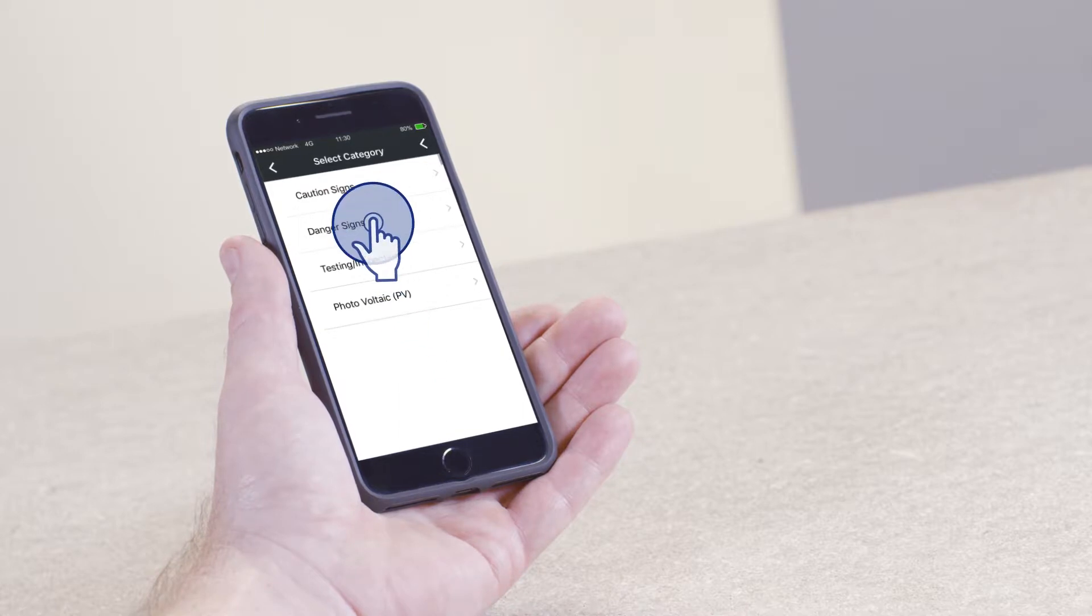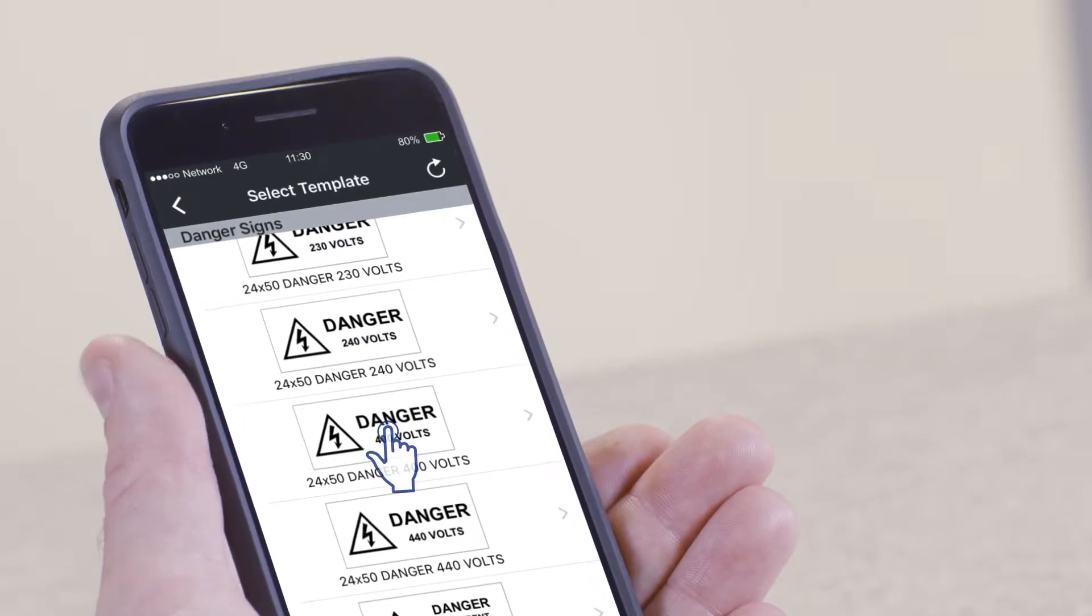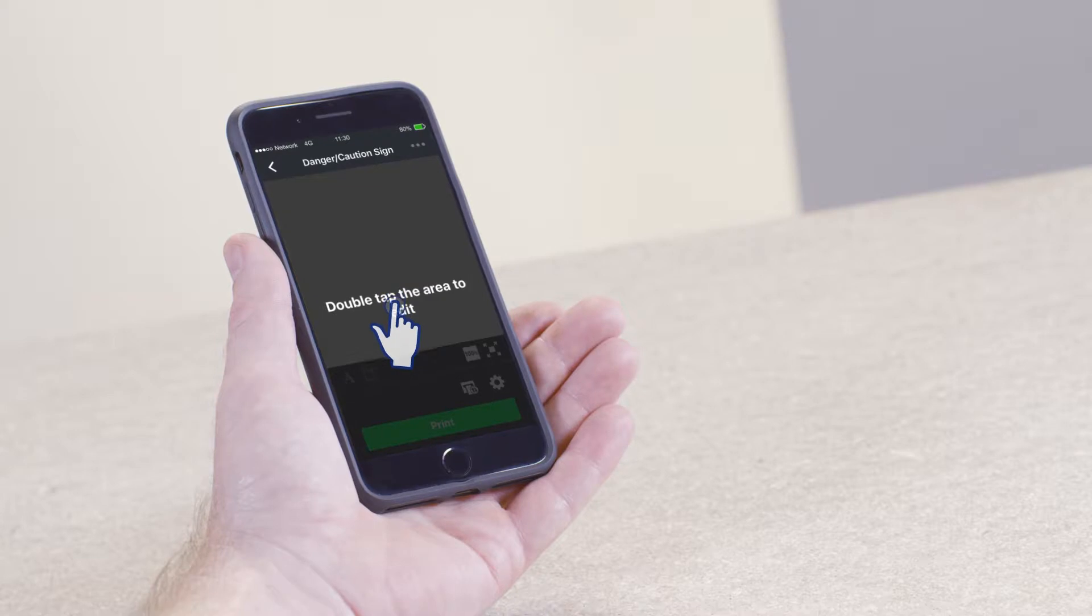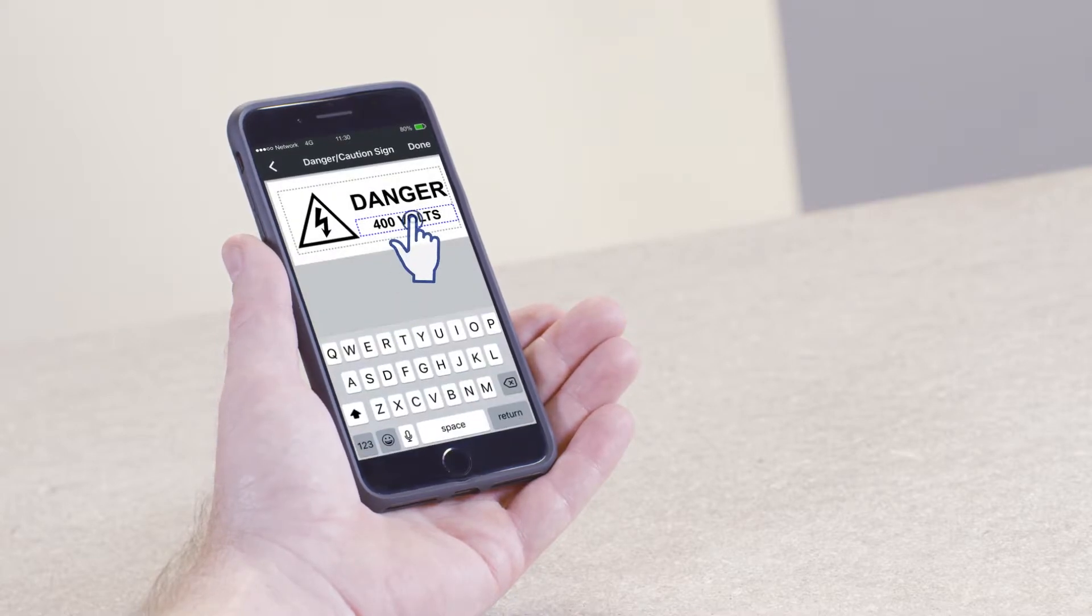Now, tap on Danger Signs. Select the template that you want to print. A message will appear that reads, Double tap the area to edit.